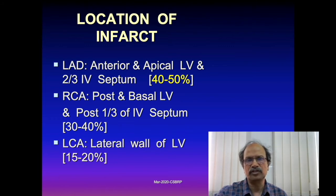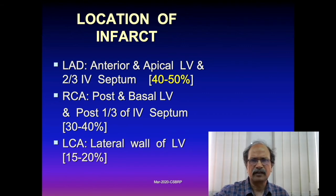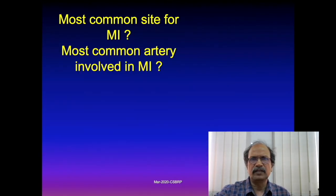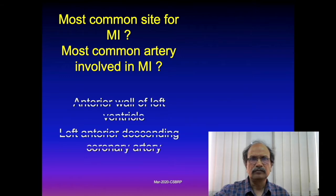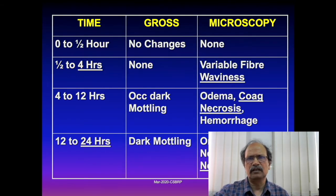As a key exam point: the most common artery involved in MI is the left anterior descending, and the most common area infarcted is the apex and anterior portions of the left ventricular wall and the anterior two-thirds of the interventricular septum. The following tables describe the microscopic and gross changes in the heart over time.